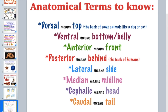For humans, these terms work differently than for four-legged animals. A dog has dorsal on top, ventral on the belly, anterior at the head, and posterior at the tail. But for humans, since we don't walk on all fours, dorsal and posterior refer to the same area — the back — and ventral and anterior both refer to the front, the belly side.